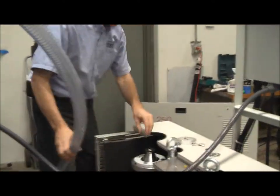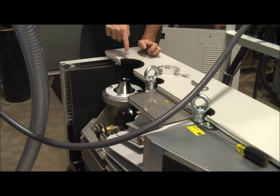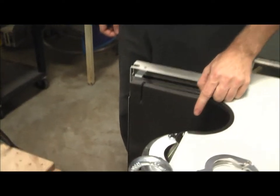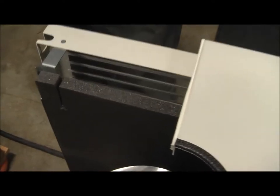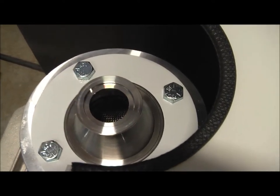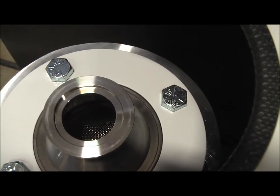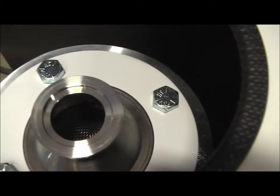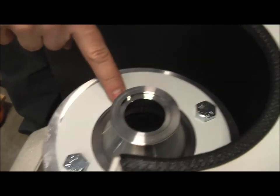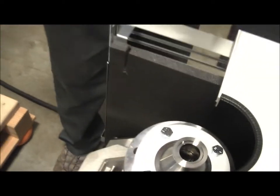Now down inside this reducer is where our screen is. This is someplace that probably on periodic maintenance we should take a look at that screen. You can see it there. Just inspect that, make sure it's not clogged, make sure there's no debris in there. If it needs to be cleaned, you'll have to take out these four big bolts and take the adapter off and remove the screen and clean it.